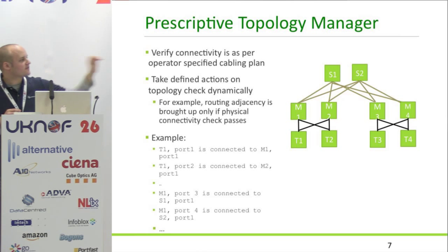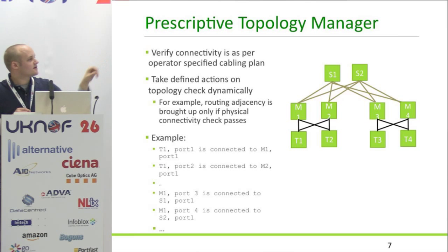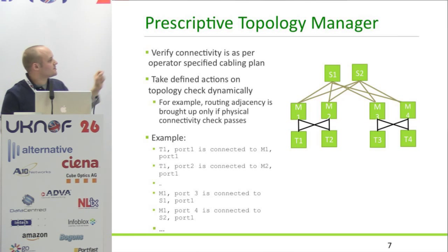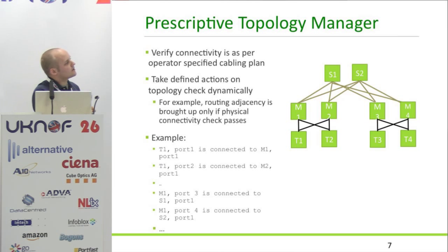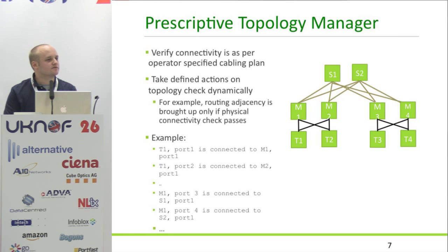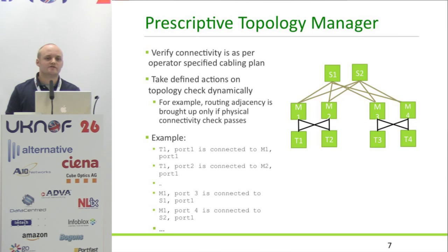In this design we've got a top-of-rack switch, a mid-spine switch, and the spine. At the bottom we've described how the ports are connected to one another. By using PTM we can verify the cabling and then have actions that come out of it. If the cabling is correct, we can bring up routing adjacencies on demand and only bring them up if the cabling is as described in our design.